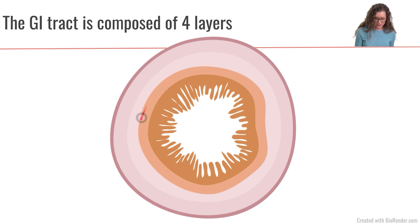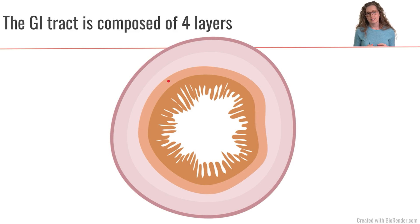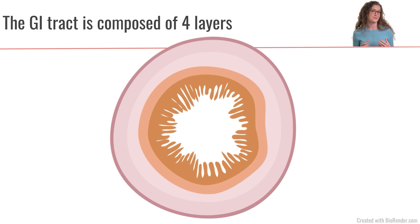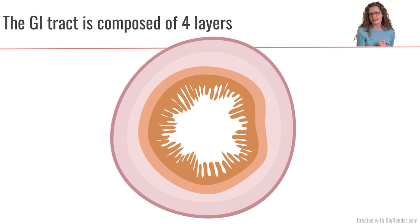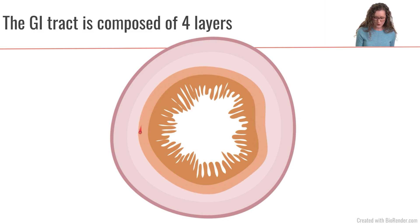There are also going to be lacteals in this submucosa layer. The lacteals are another set of vessels that are part of the lymphatic system. We'll talk a little bit later about how the lipids that we absorb actually go into these lacteals first rather than straight into the blood. So those are the important characteristics of the submucosa layer.